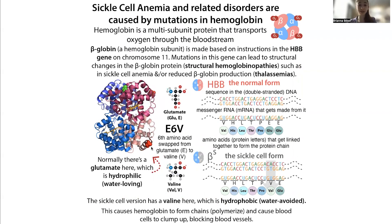For example, in hemoglobin there's this glutamate, which is a negatively charged amino acid, and it's going to be found on the surface. So it's going to be able to hang out with water and all is happy — it's very hydrophilic. But what happens is if you have this sickle cell anemia mutation, that glutamate gets swapped for a valine.